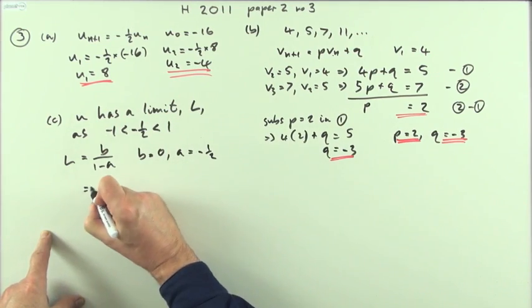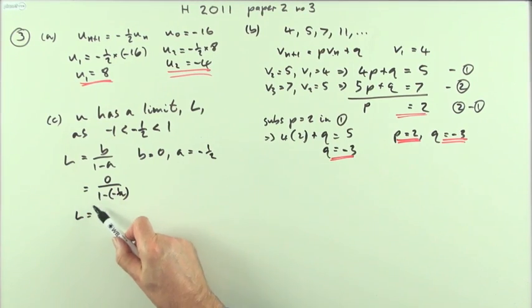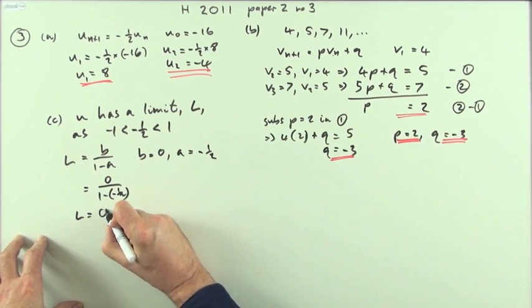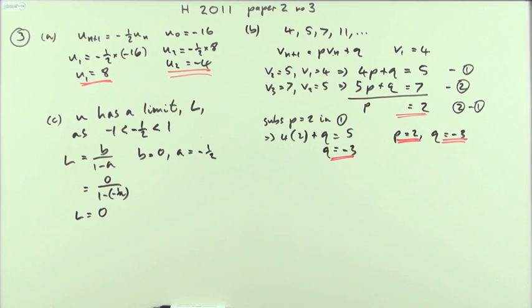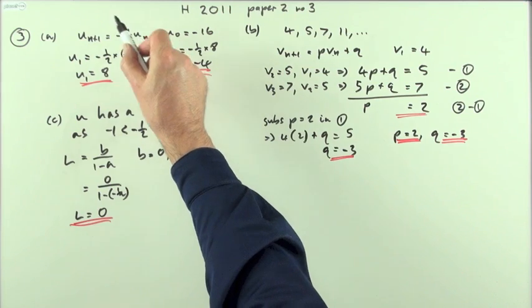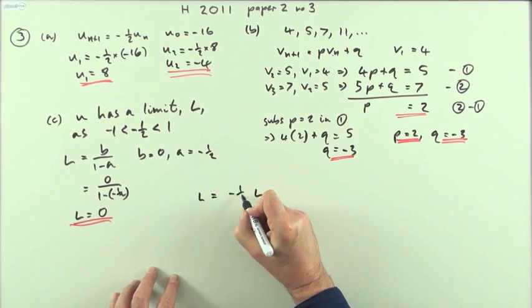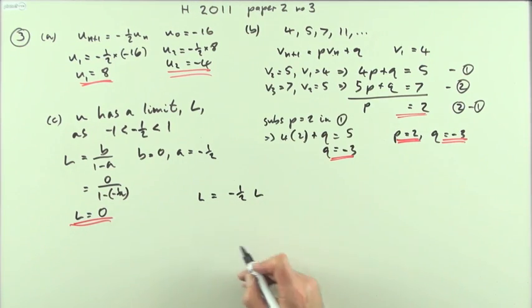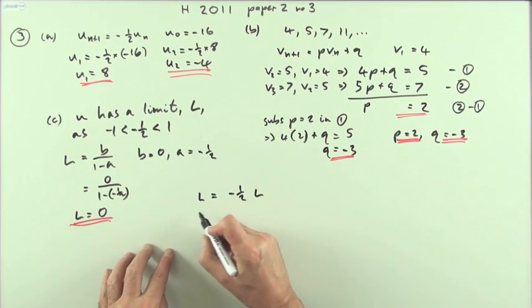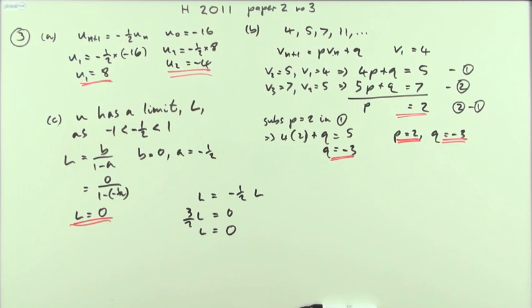B is 0 and A is the factor, which is negative 1 half. So you've got 0 over 1 take away negative 1 half. And it doesn't matter what the denominator comes to, because if the numerator is 0, then the whole fraction comes to 0. So the limit would be 0. Or you could say, if the limit is L, that means if you put L into the formula, the answer that comes out should also be L. If you put L into it and multiply by negative 1 half, and there wasn't anything to be added, the answer should be L. Taking that over the other side, 1 plus the half is 3 upon 2, 3 upon 2 L is 0, which means L would have to be 0. So that's the same answer.